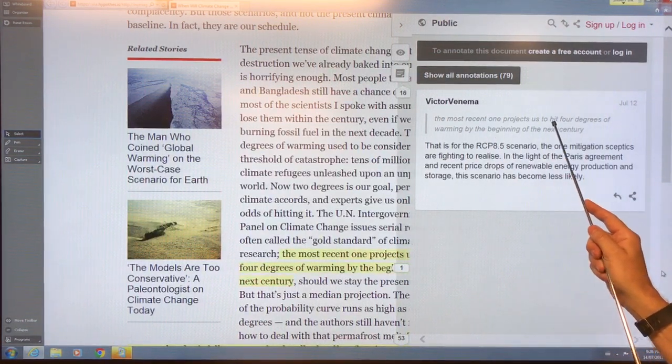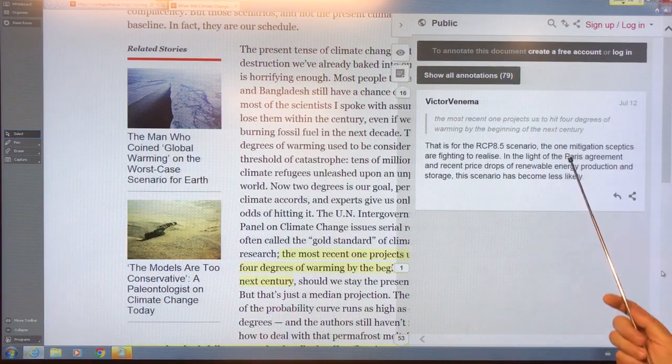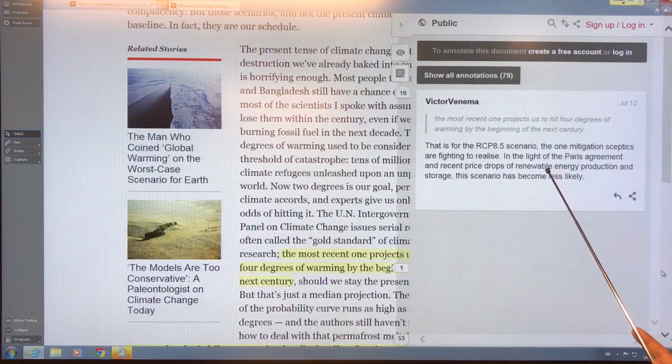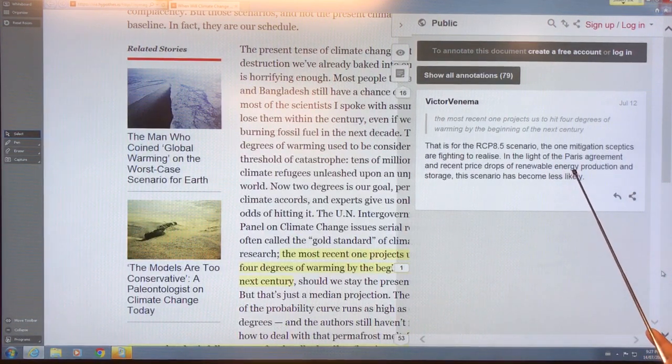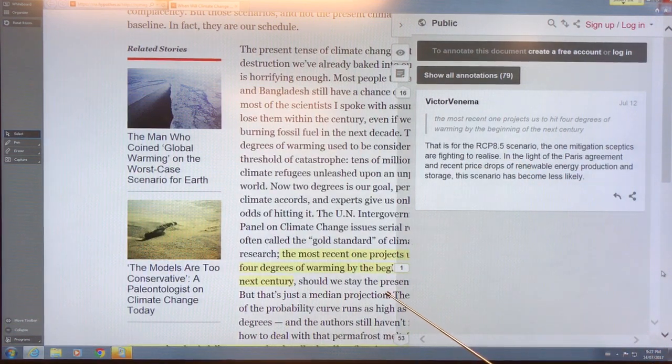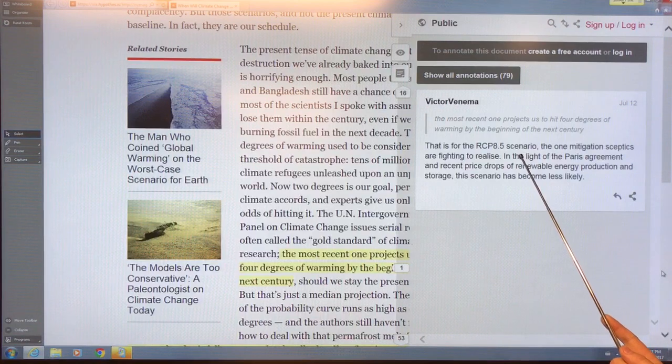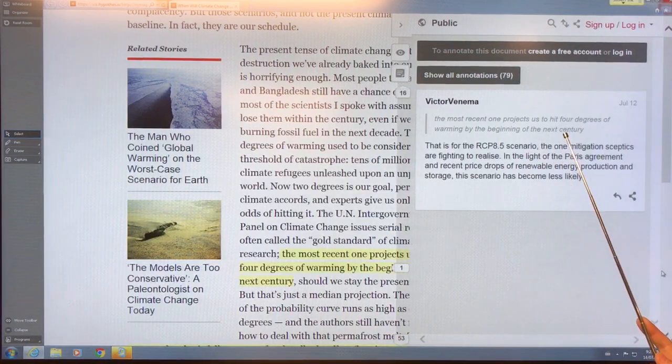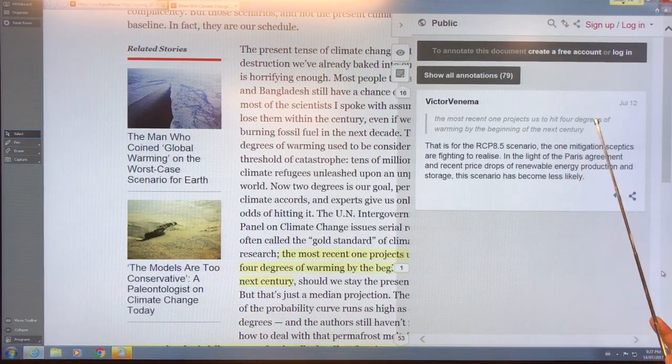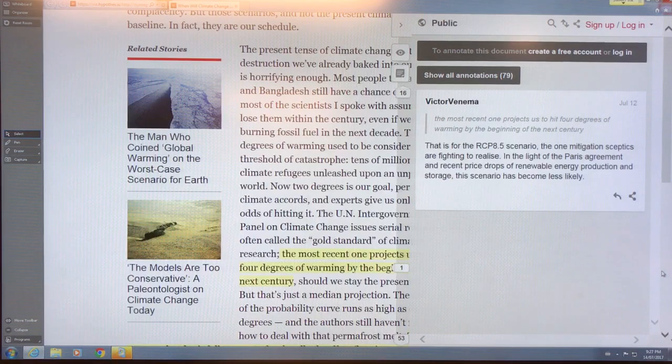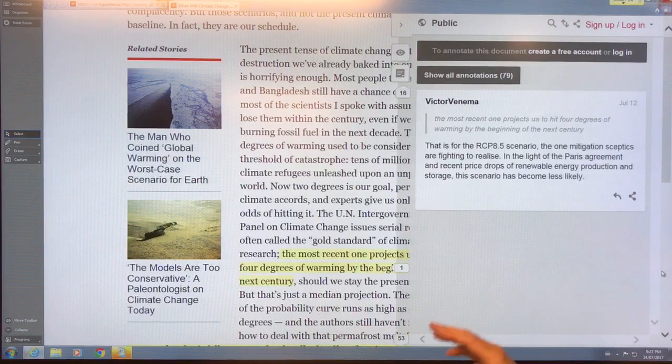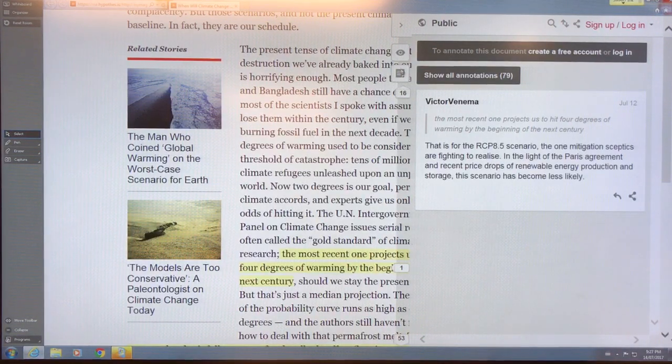The most recent one projects us to hit four degrees by the beginning of the next century. That's for the RCP 8.5 scenario. He's saying it's less likely. I thought this was for the worst-case scenario, which is the eight-degree scenario. The RCP 2.5 is the best, and that one requires geoengineering, assumes that bioenergy with carbon capture and storage is performed on vast amounts of land which we don't have. Negative emissions. This needs to be checked, this comment.